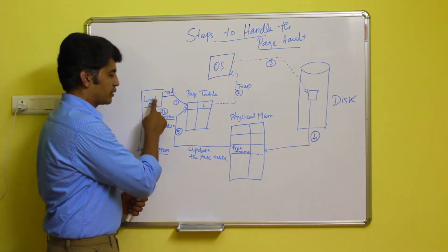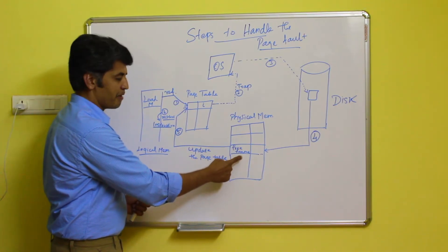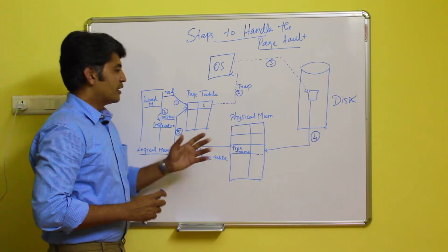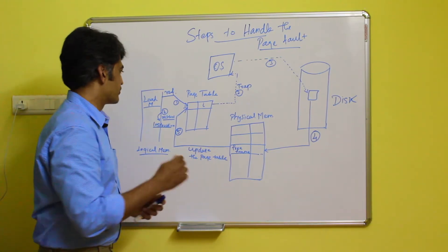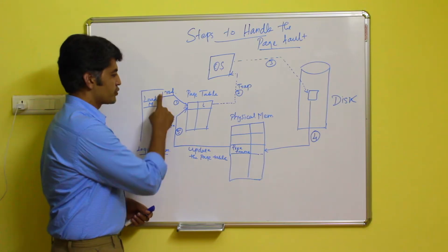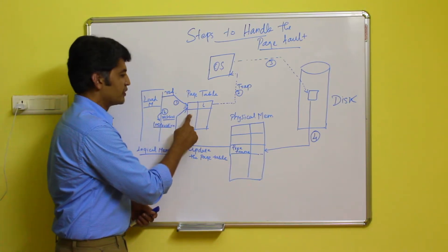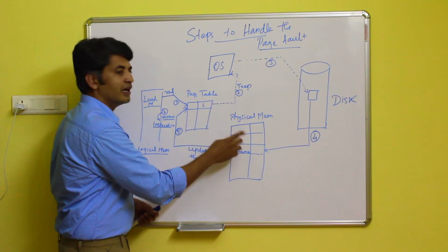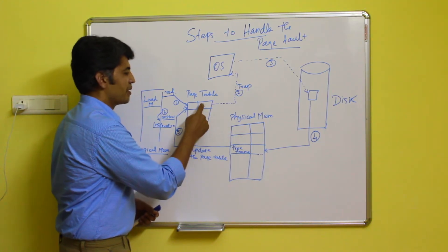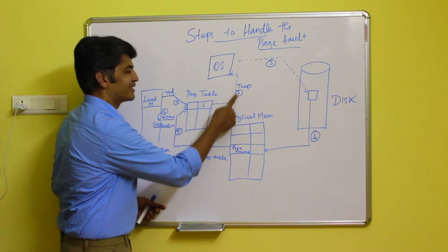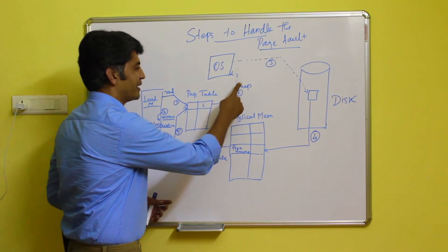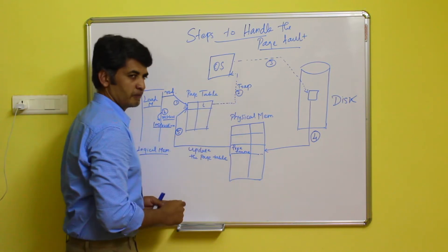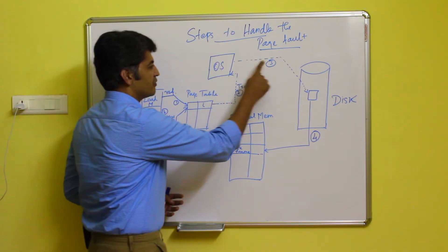If the required page is not present in the physical memory — that is, not in the exact physical frame — that is called a page fault. When the logical memory refers the page table and the frame number is not available, it is called an invalid bit. This automatically generates a trap, meaning a page fault is generated and the operating system is notified.